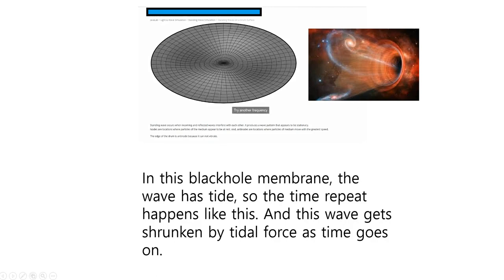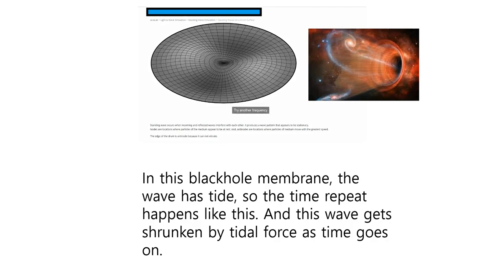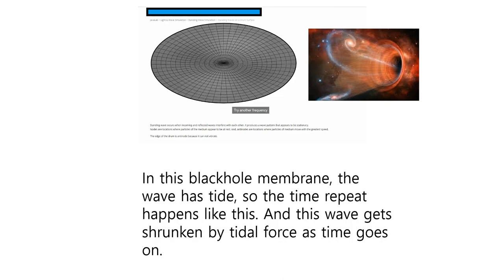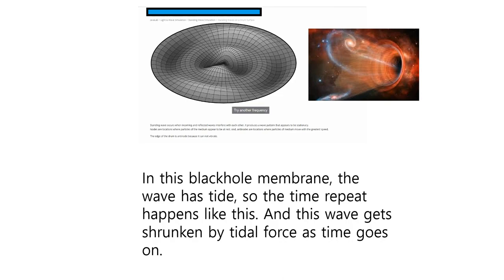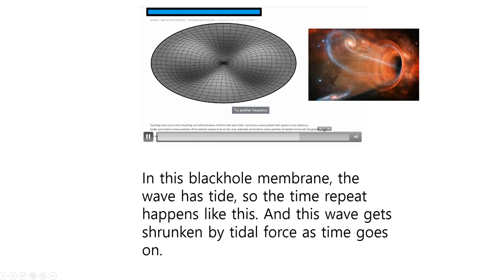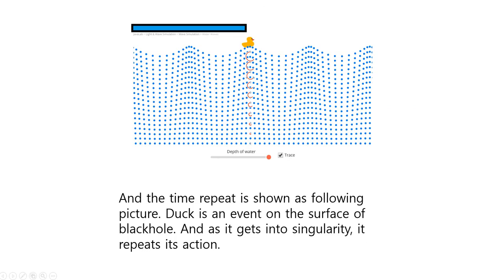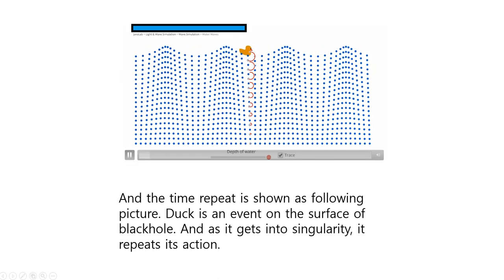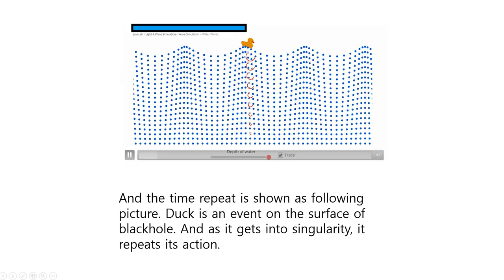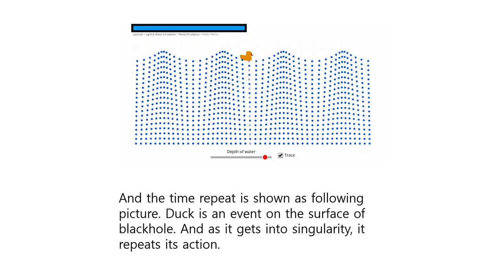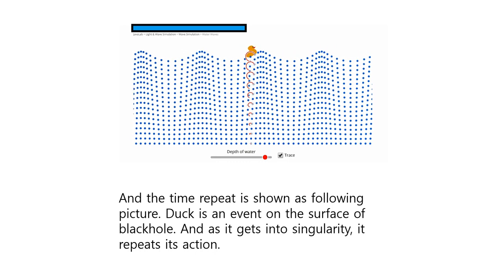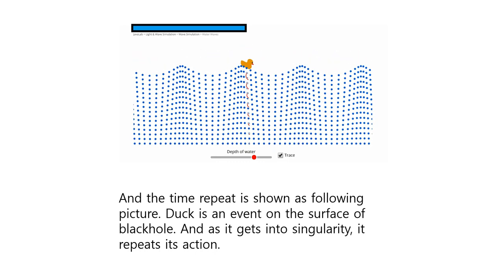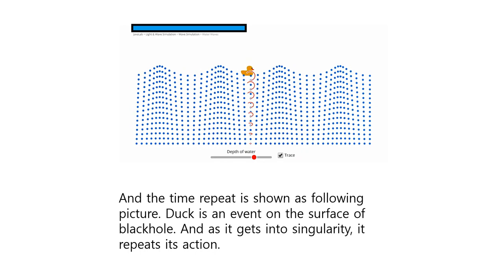In this black hole membrane, the wave has a tide, so the time repeat happens like this. This wave gets shrunken by tidal folds as time goes on. The time repeat is shown in the following picture. A duck is an event on the surface of the black hole, and as it gets into the singularity, it repeats each action.